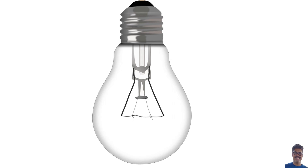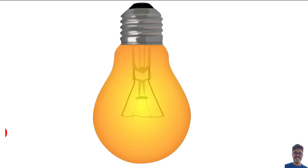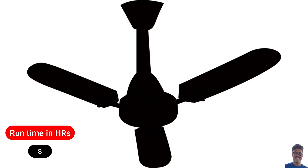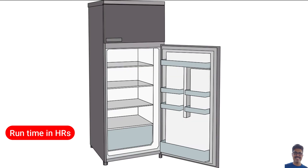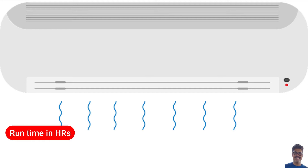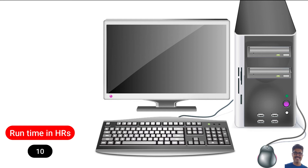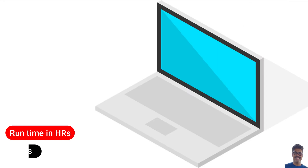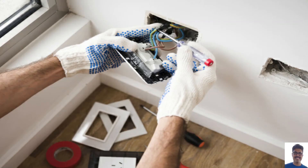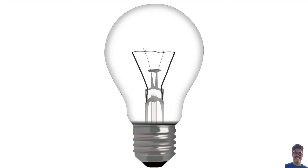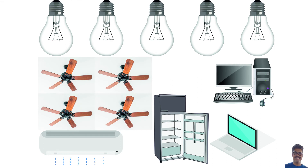Suppose you are using these loads — you should know the load runtime. I have taken approximate runtimes: the lamp is on for 8 hours, ceiling fan runs for 8 hours, TV is watched for 4 hours, refrigerator runs for 12 hours, air conditioner runs for 6 hours, desktop computer is on for 10 hours, and laptop for 8 hours. In your household, it's very unlikely you'll have only one lamp, so I've mentioned the quantity. I've assumed five lamps, four fans, one TV, one fridge, one AC, one desktop computer, and one laptop.